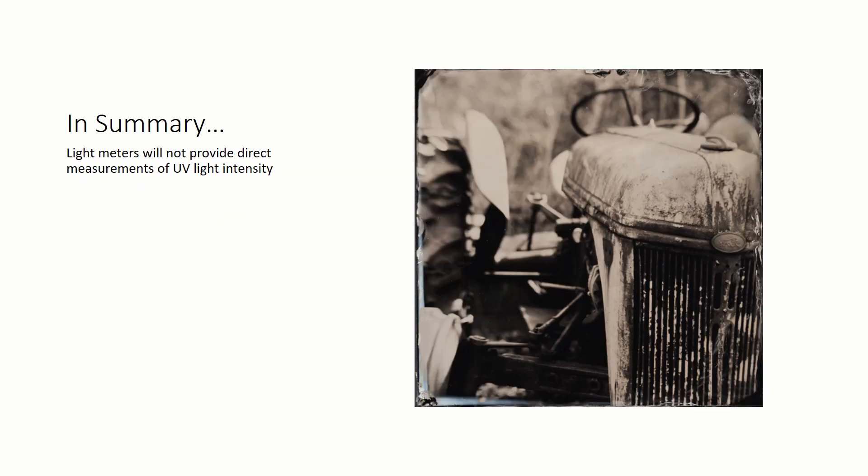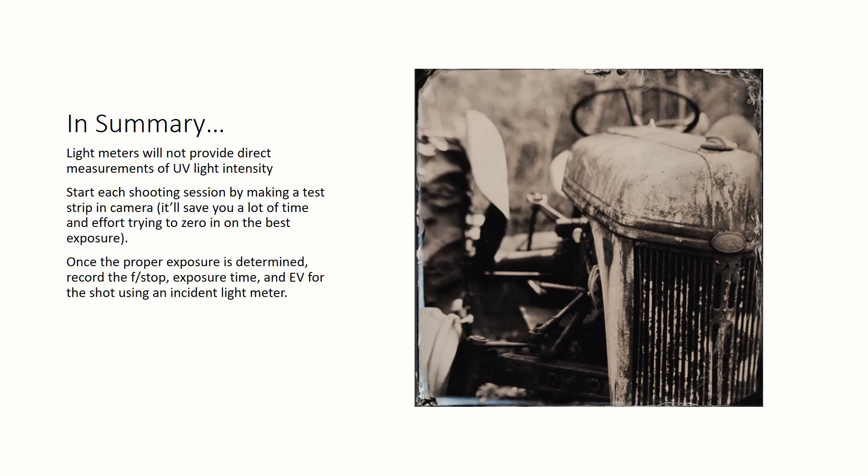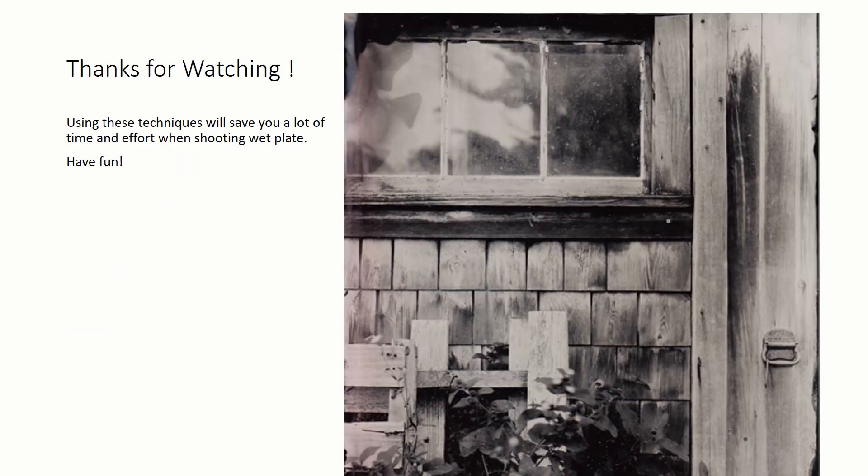In summary, light meters will not provide direct measurements of UV intensity. Start each shooting session by making a test strip in camera. It'll save you a lot of time and effort trying to zero in on the best exposure. Once you've determined the proper exposure, record the f-stop, exposure time, and EV for the shot using an incident light meter. With each new exposure, record the exposure settings and EV in your notebook. Light quality changes rapidly early in the morning and late in the afternoon. Have fun and thanks for watching.